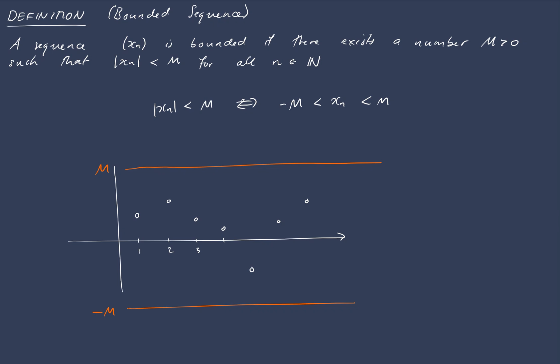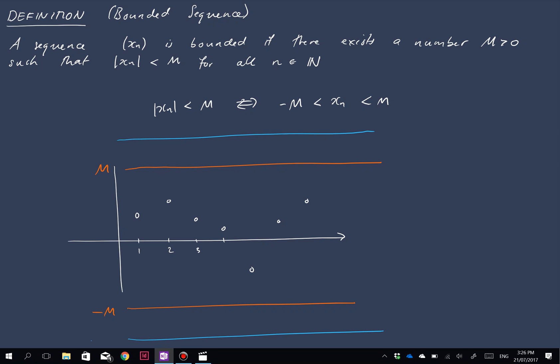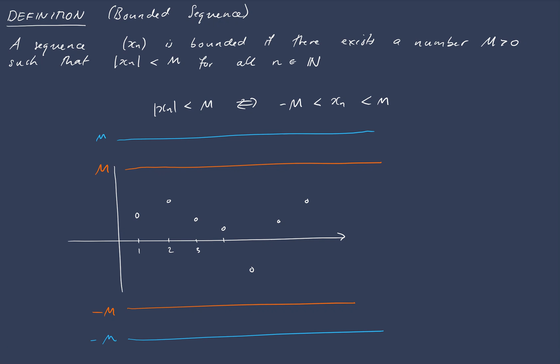And it doesn't matter exactly what m is, so if this is one bound, it's just an existence property, so we could equally well find another value here, which is higher up. If we could find any value m, this could be another possibility for m and negative m. If we can find any m satisfying this condition, so that all of the terms of the sequence lie between those two values, then we can say that the sequence is bounded.